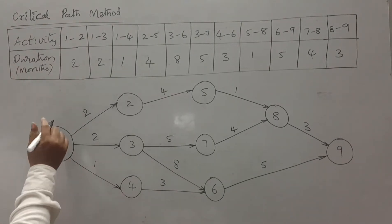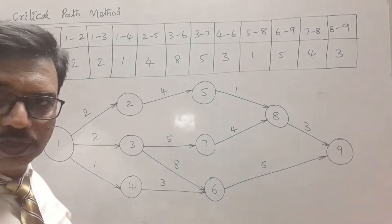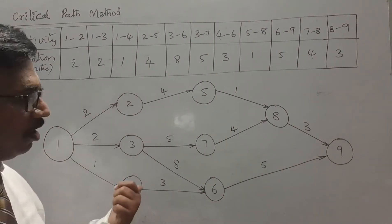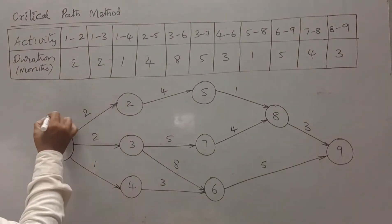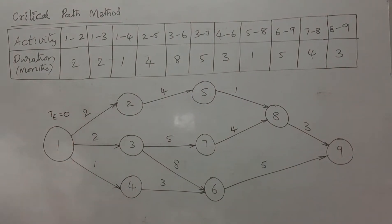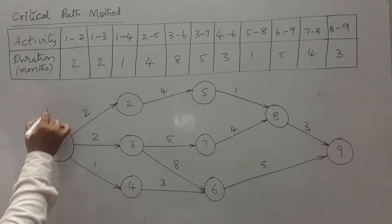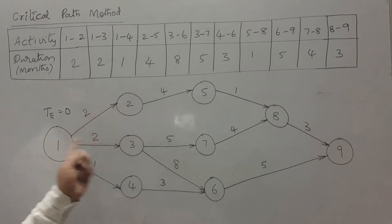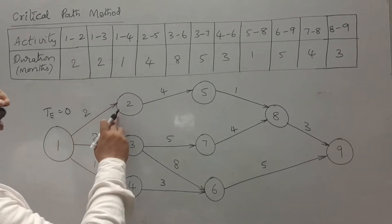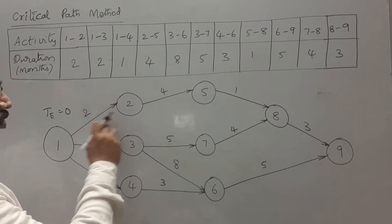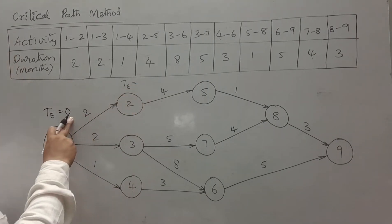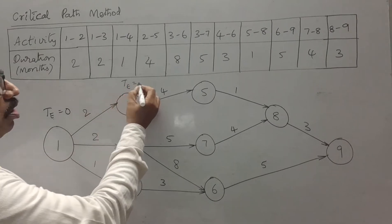In order to calculate the total project duration, we have to find out the earliest and latest start and finish times for different activities. Starting at the first node, the earliest time TE equals 0. So at clock time 0, we start activities 1-2, 1-3, and 1-4. For activity 1-2, the duration is 2 months. If this activity begins at time 0, then 0 plus 2 gives TE = 2 at node 2.